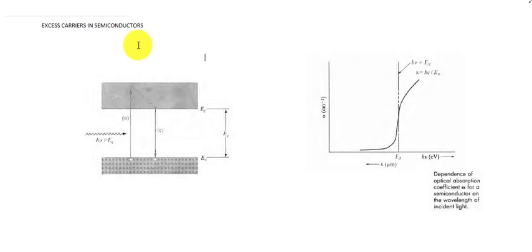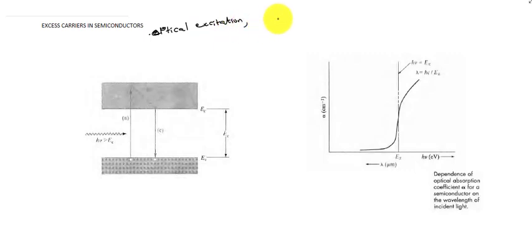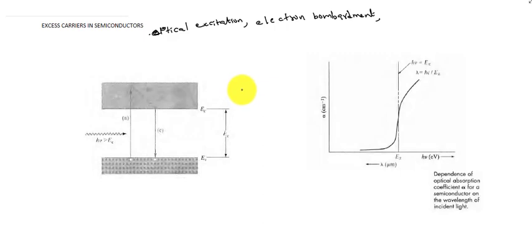There are several methods for generation, like optical excitation, also known as the optical absorption method, electron bombardment, and injection across a PN junction. In this session, we are going to discuss about the photo generation or optical absorption method of generating excess carriers.